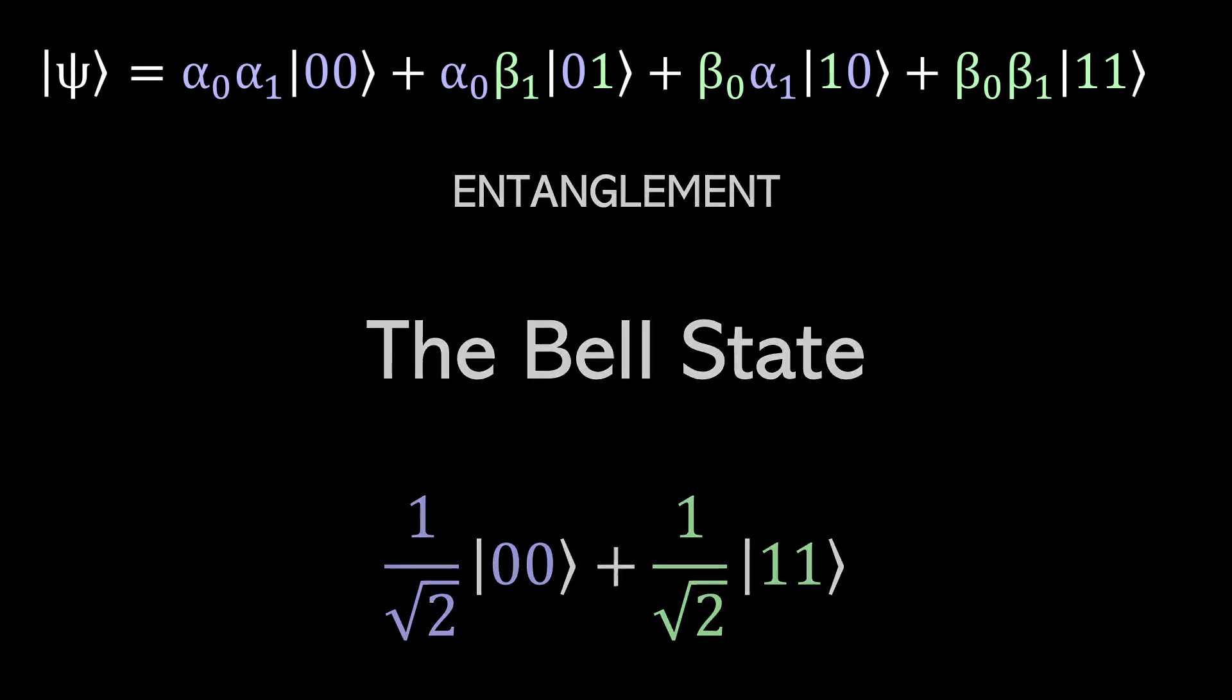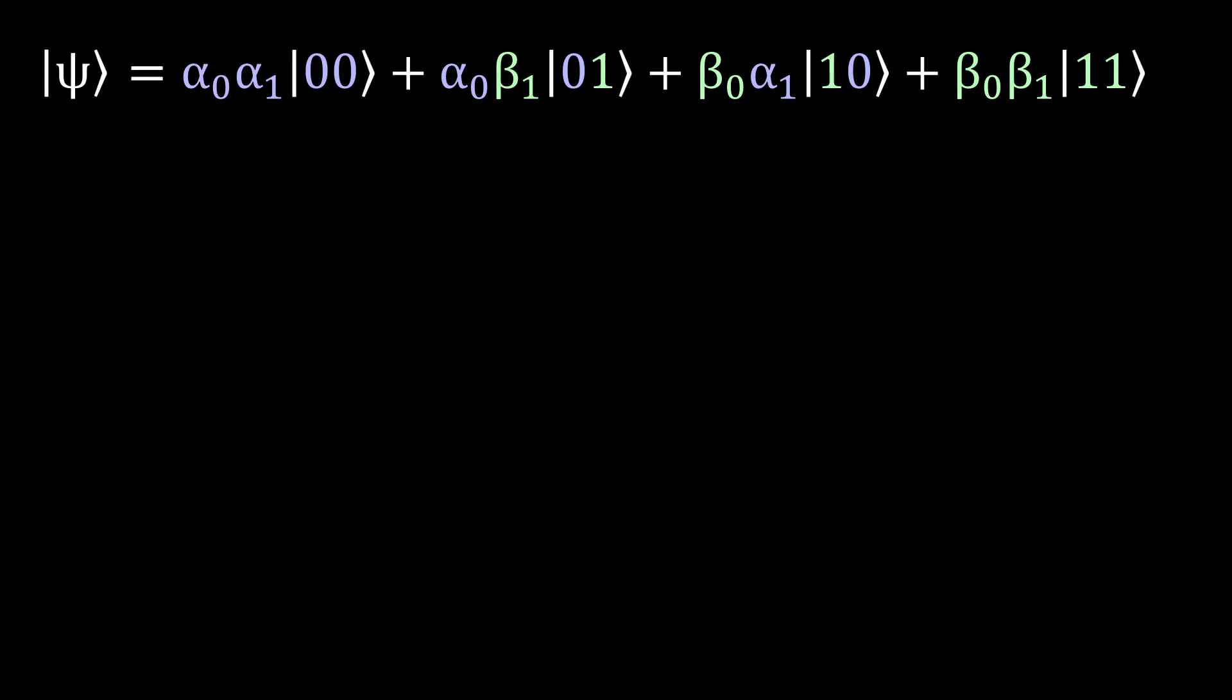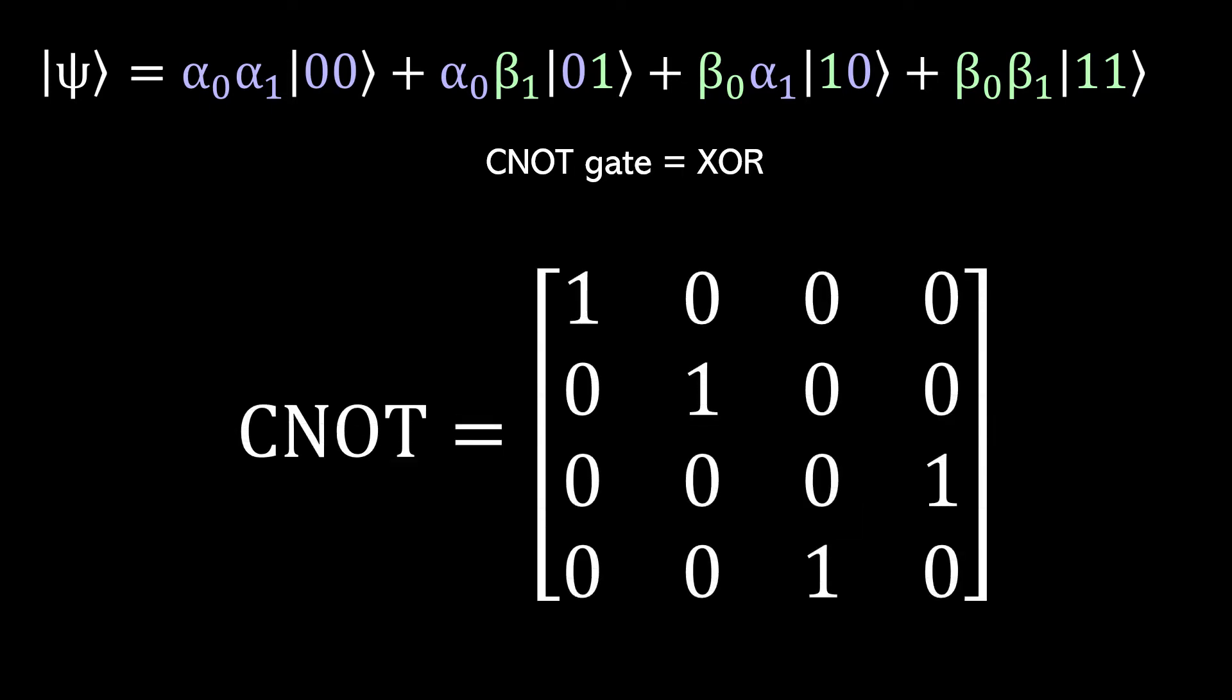So now that I can describe a multi-qubit state, I can talk about the other extremely important gate in quantum mechanics. It's called the CNOT gate, and it's the quantum equivalent of a classical XOR gate. It looks like this, and what it does is, in the part of the first qubit that is zero, it leaves the second qubit alone, and in the part of the first qubit that is one, it flips the second qubit. It applies the Pauli X gate to the second qubit.